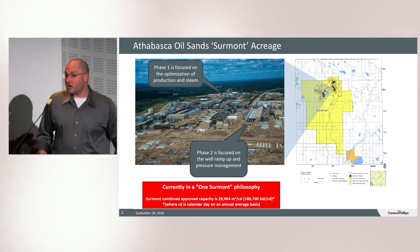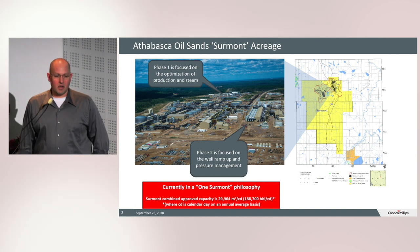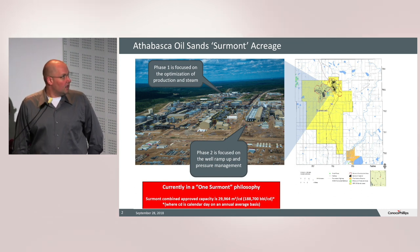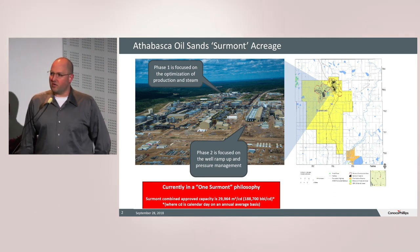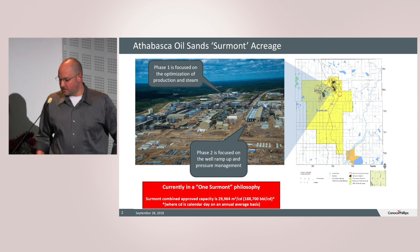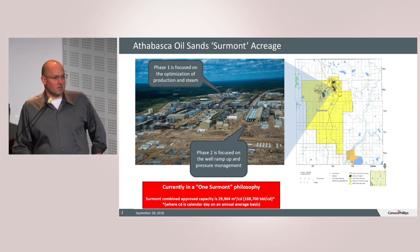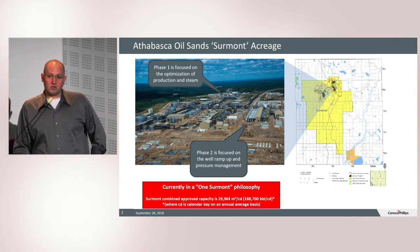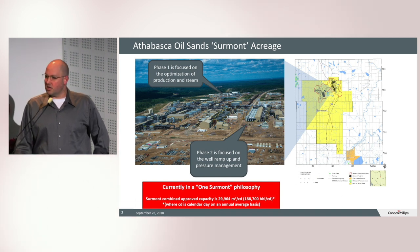So with ConocoPhillips, we have some acreage up in northeastern Alberta that is known as Surmont, which is joint-operated with Total, and it has quite a lot of oil in the Athabasca tar sands. In fact, there's estimations in the trillions of barrels of oil in the form of bitumen up there. And so far, we have only started to develop just the northern part of this acreage.